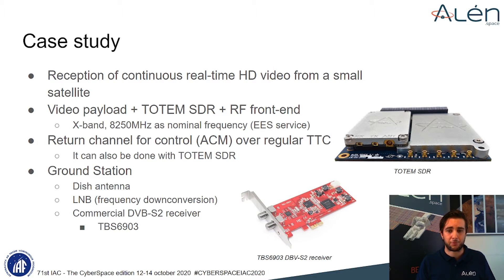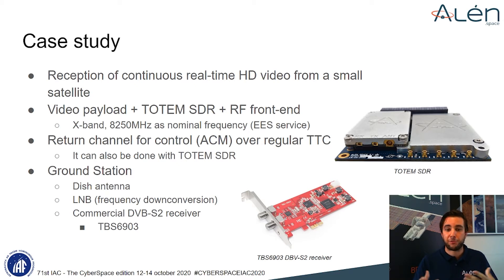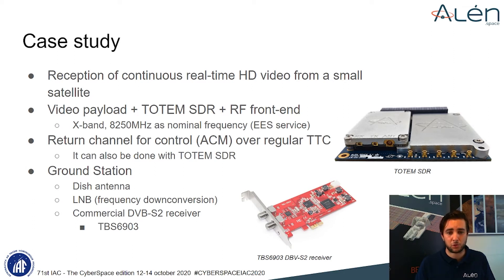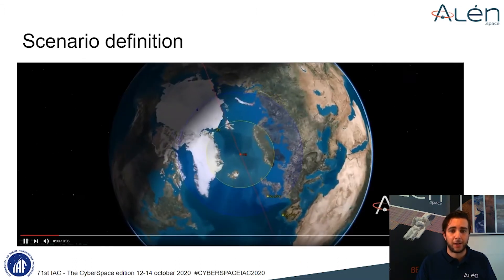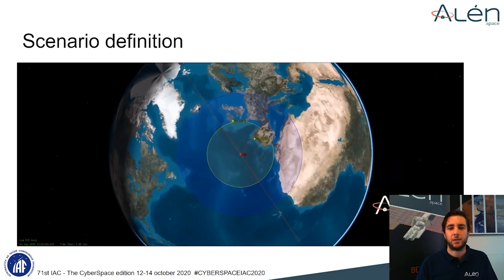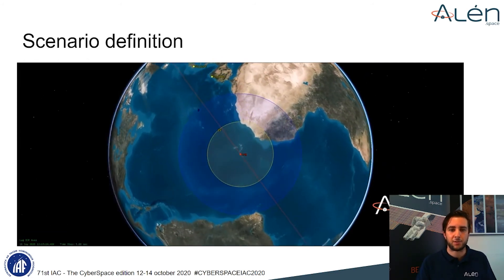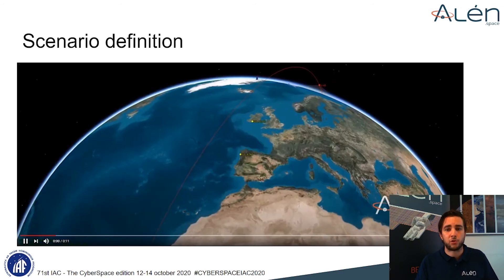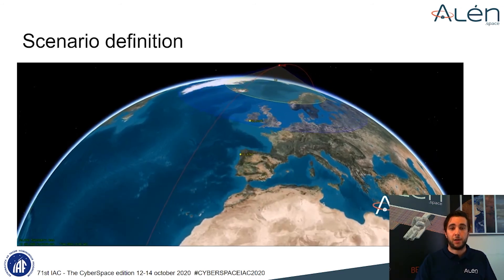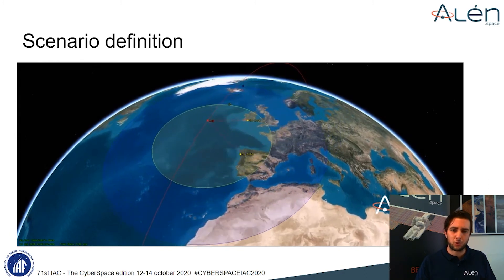A return channel is needed for control of the adaptive coding and modulation, and this is done on the same TOTEM software-defined radio with a low data rate uplink channel for telecommand. Our ground station has a very simple approach — based on commercial components, we use a dish antenna plus an LNB, which performs frequency downconversion to deliver the signal to a DVB-S2 PCIe card connected to a computer. Our satellite, named LAC from Celtic mythology, is located in a LEO orbit at 500 km in a sun-synchronous orbit. We are considering two ground stations: one near Vigo, Spain, at Alien Space headquarters, and another in Cork, Ireland.